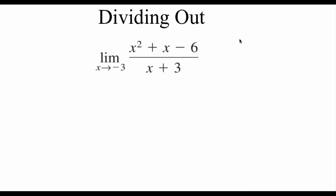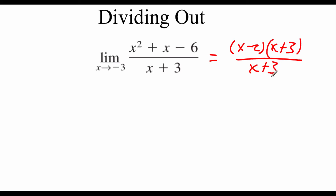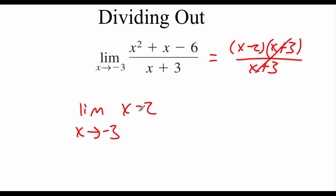So one technique we can use is called dividing out, which involves factoring. Looking at the numerator x squared plus x minus 6, we can factor it into x minus 2 times x plus 3. On the bottom we still have x plus 3, so we can cancel those out. Now we've got the limit of x minus 2 as x approaches negative 3. Using direct substitution, we get negative 3 minus 2, which is negative 5 — matching our table.